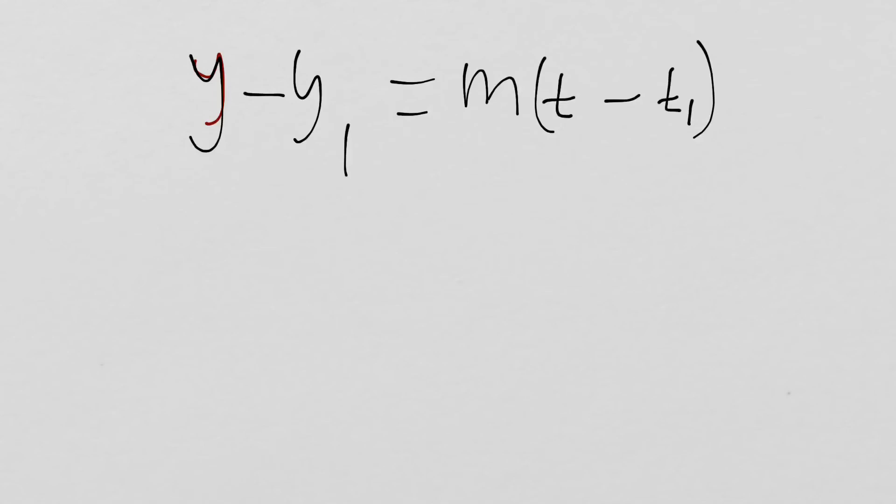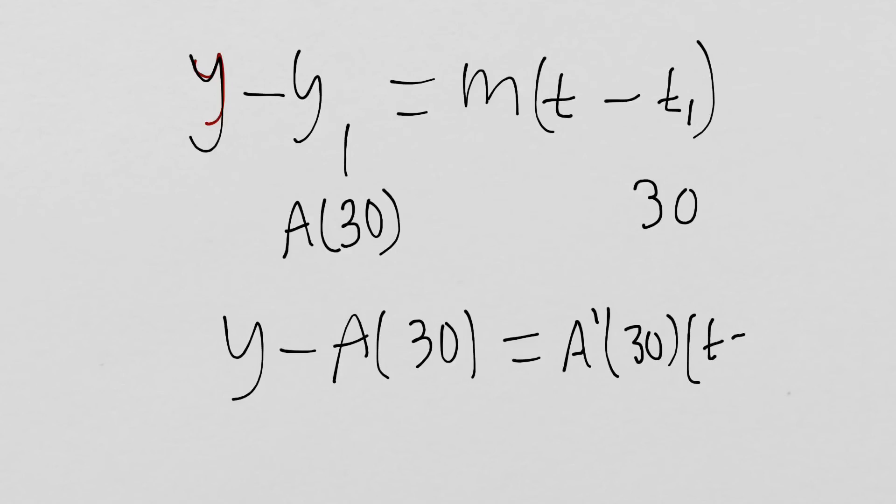We also know that y₁ is just going to be the output at 30, so that's going to be A(30). Now we can write this as y minus A(30) equals—what is m going to be? It's going to be the slope at 30, which is just going to be A'(30) times T minus 30.